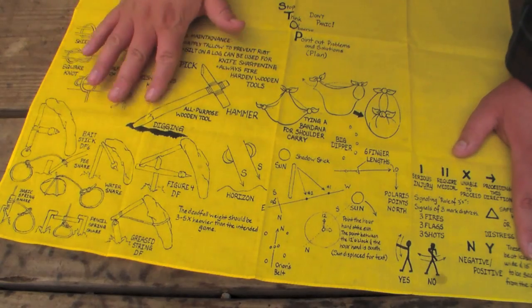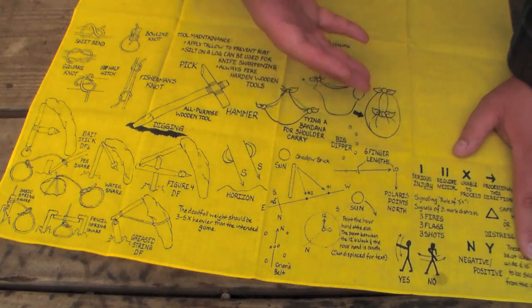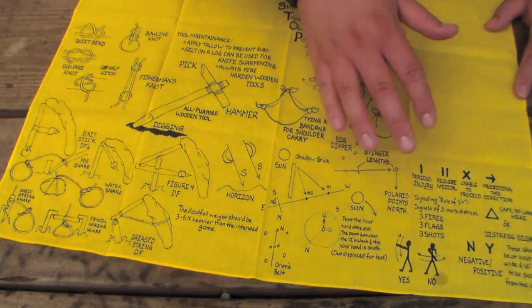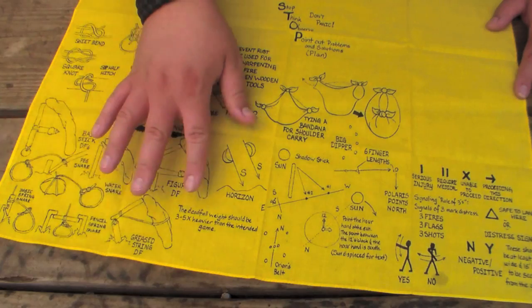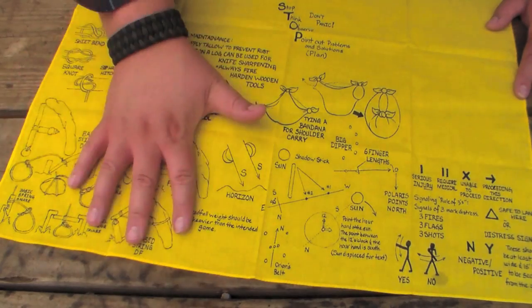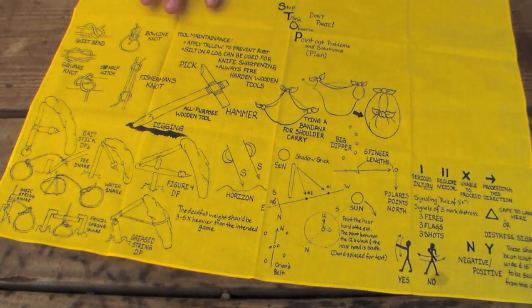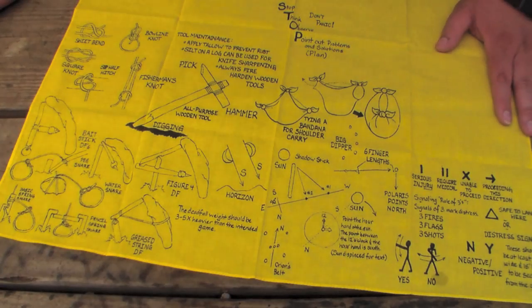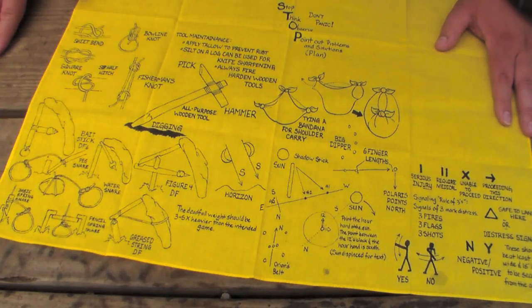So here I have some knots. I have ideas for tools and stuff to use this bandana for. I have some signaling stuff over here. Navigation and then these are deadfalls and snares concepts. And then I'll have another section where I'll talk a bit about maybe medical stuff. And you know what, I don't really know what I'll do on the rest of this.